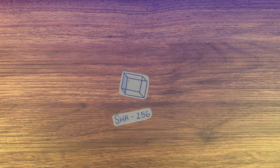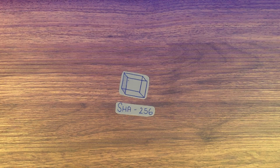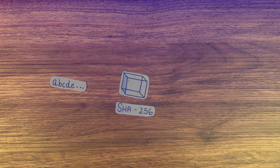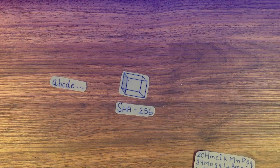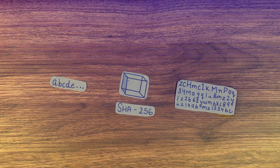Let me explain what hashing actually is and how it works in real life. Consider a hash as a magic box — let's give it the name SHA-256. SHA stands for the algorithm it uses and 256 stands for the number of zeros and ones in the algorithm. If I input the string 'abcd' inside the box, it runs complex mathematical equations and gives me an output hash value. You cannot decode it back to the original string.